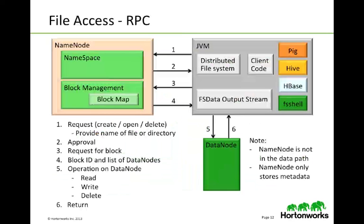To access data from a client application, a JVM or Java virtual machine will request a file or directory — create it, open it, or delete it. The name node will give approval. The Java virtual machine will then request a block, and the name node will provide the block ID and the list of data nodes where that data is located. The operation will then be performed directly on the data node — a read, write, or delete — and a return is sent back to the JVM. The important point here is that the name node is not in the data path; it simply stores the information about the file.